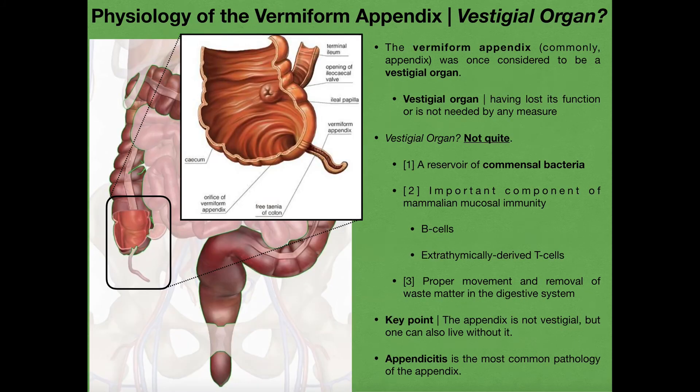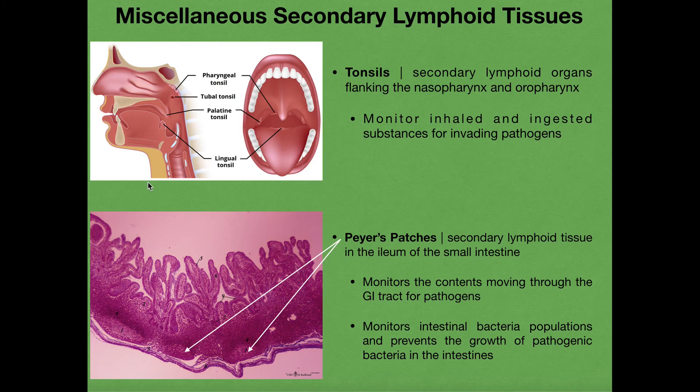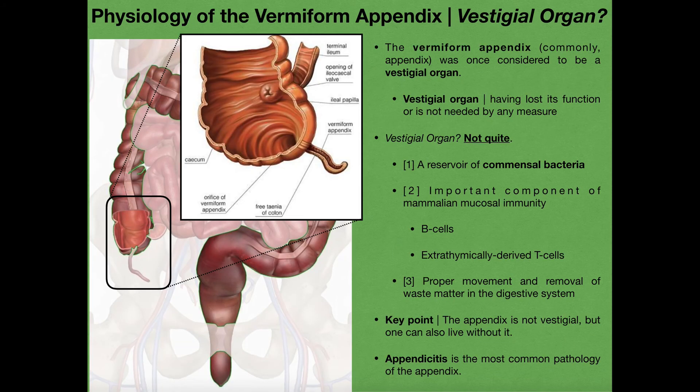Just like in the case of the appendix, the tonsils can become inflamed for similar reasons — for example, if they can't drain due to blockage of an efferent lymphatic vessel. They can swell and you have to get your tonsils removed, which is called a tonsillectomy. Removal of the appendix is called an appendectomy.